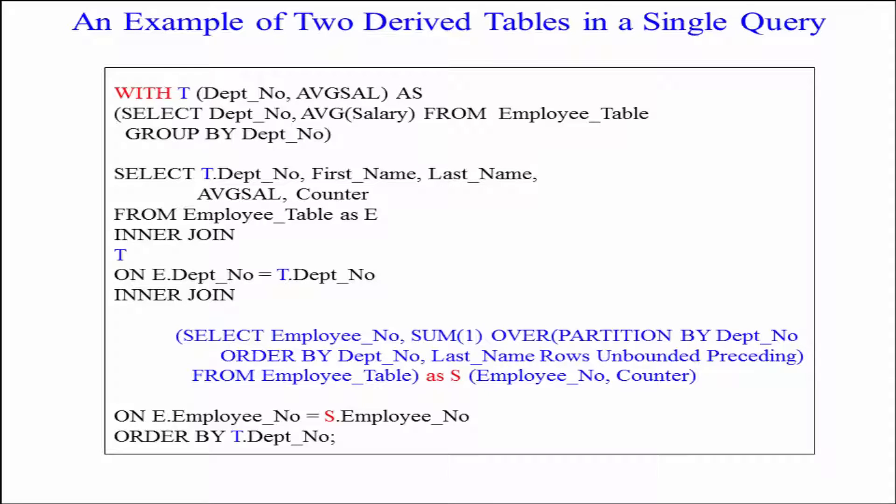So here we're gonna have the employee table which we're gonna join to two derived tables. One I call T and one I call S. Right away you can see WITH T, I build that derived table. It's now materialized.